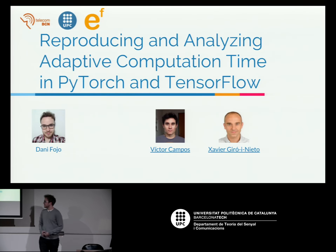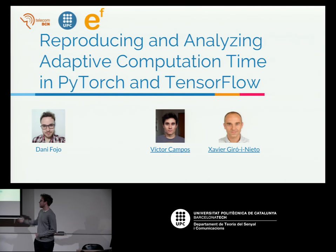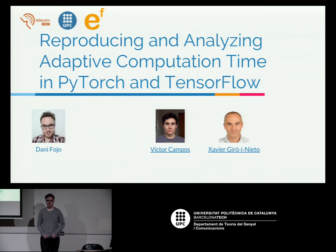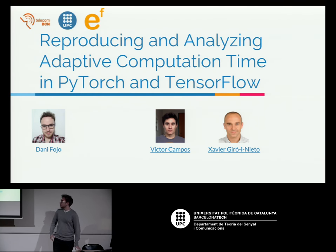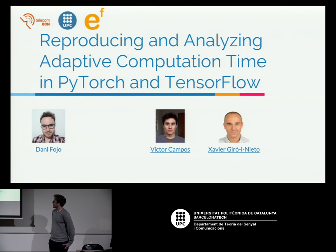My name is Danny Fojo, and I did this baccalaureate thesis with Victor Campos and Xavier Giro Inieto on reproducing and analyzing adaptive computation time in PyTorch and TensorFlow.